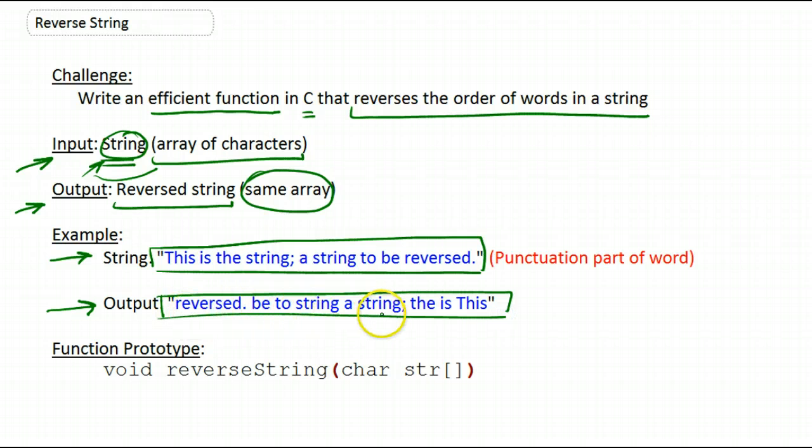'reversed. be to string a string; the is This' - this doesn't really make sense, but what we essentially did is take the last word within the string and place it at the very beginning of our output string.